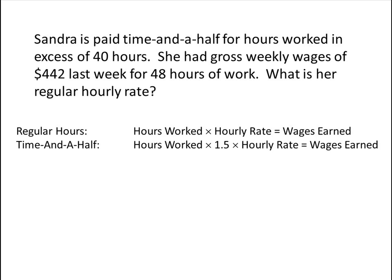So if we write down this in terms of our unknown hourly rate, r, we have 40 times r, our 40 regular hours times our hourly rate r, and then our 8 time and a half hours times one and a half times r, and then we add those two sets of wages together, we get our total wages, which is $442.